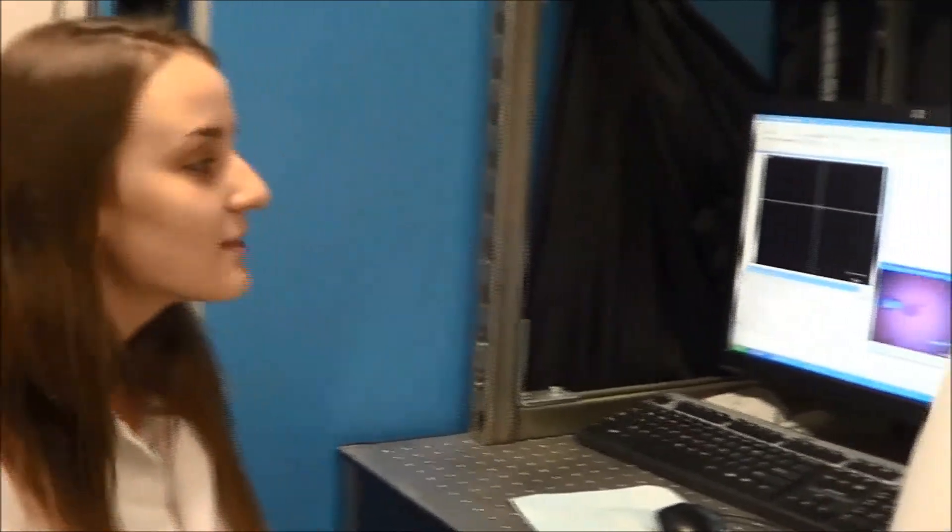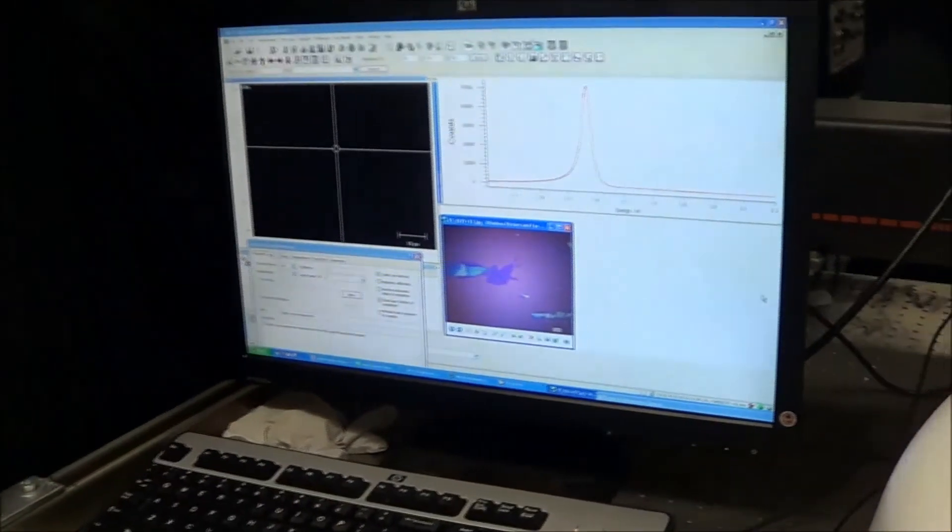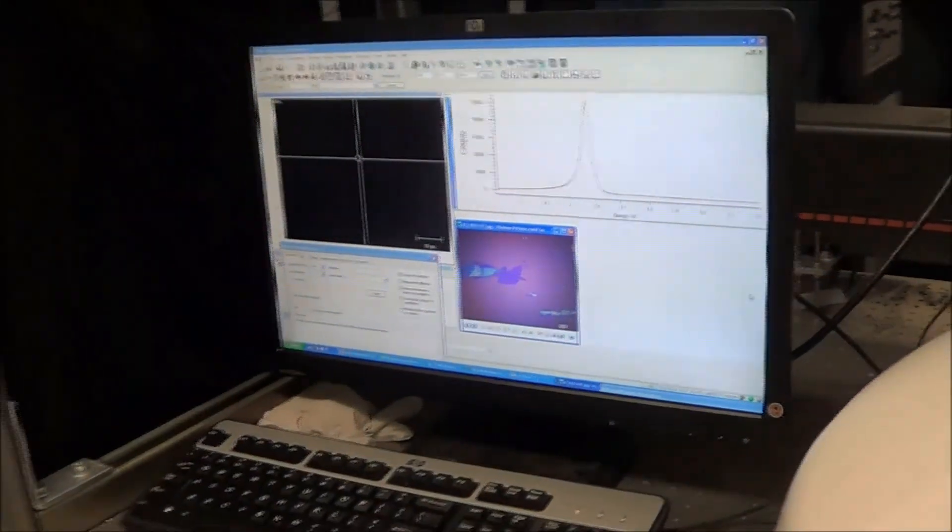The next step in characterizing our flake is by using the same machine but changing our settings to photoluminescence. The photoluminescence test will give us information about the band gap, which in turn will allow us to understand whether or not we've exfoliated to monolayer.